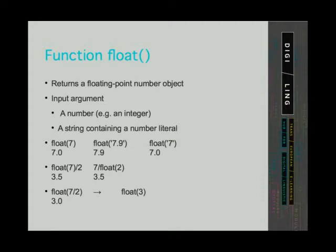The next conversion function is float. This function returns a floating point number object. As an input argument it takes numerical types like integers for example, and it takes a string containing a number literal. For example, it takes a 7 and converts it to 7.0.